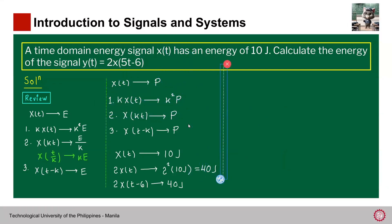Next, to be able to obtain y(t), next we perform time scaling. So from the 2x(t - 6), we need to scale by 5. So we have 5t minus 6. So we perform what we call time scaling. And we know, based on the concept we reviewed, whenever we multiply a constant to time, the energy is divided. So our energy is 40 joules, so you just simply divide this by the constant 5, which we multiplied.